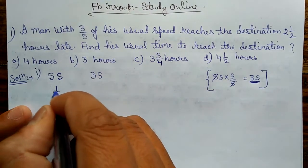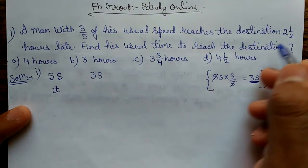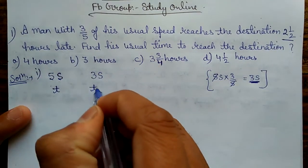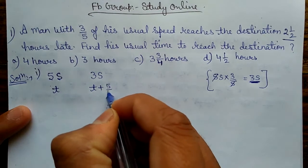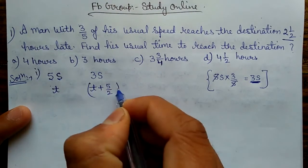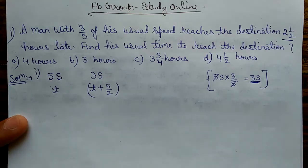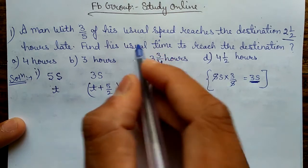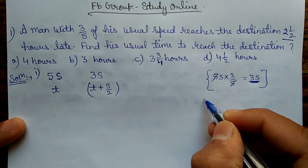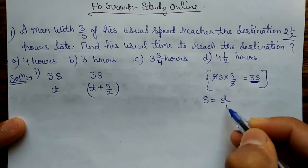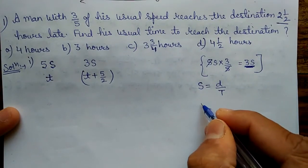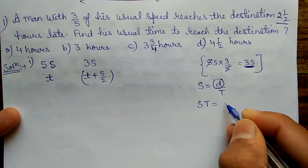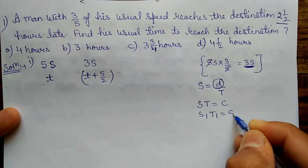In the first case, time is t — that is the usual time. In the second case, he arrives 2.5 hours late, meaning t plus 2.5 hours, or t plus 5/2 hours. Now, in both cases, distance is constant. Since speed equals distance by time, whenever distance is constant, s×t is constant. That means s1×t1 equals s2×t2.